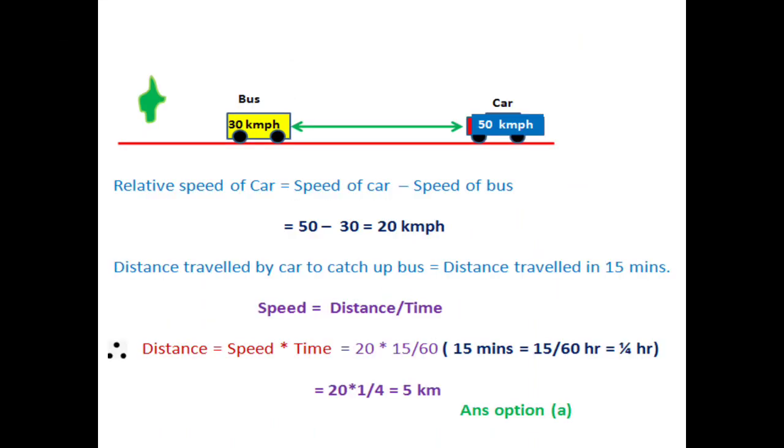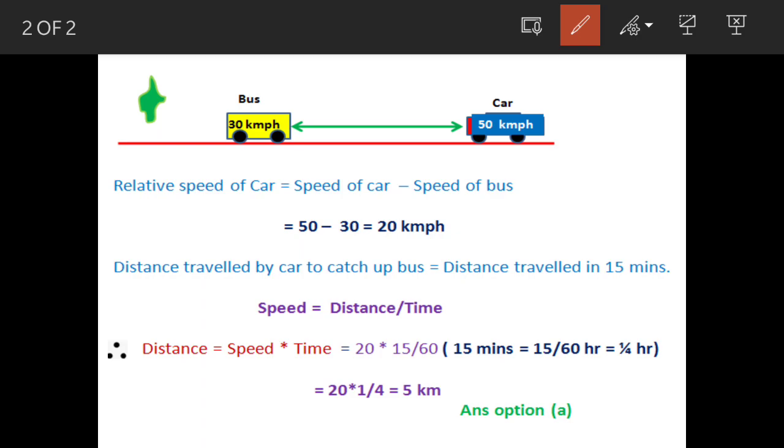We need to work out the relative speed of the car. What is relative speed? If two objects are moving in the same direction, the speeds are actually subtracted.